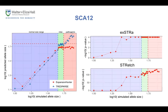For SCA12, Expansion Hunter and TredParse perform fairly well throughout the normal range, and then Expansion Hunter shows the same artificial penalty from the WES-like data as repeat size increases. ExSTRa and Stretch perform nicely — they call outliers even if samples are still within the normal threshold range, because they use outlier tests rather than comparing size estimates to known thresholds. Expansion Hunter and TredParse can use information about known STR thresholds, whereas ExSTRa and Stretch do not.